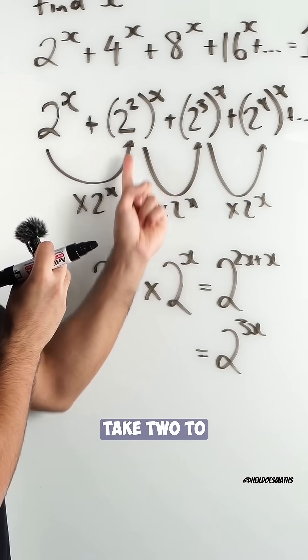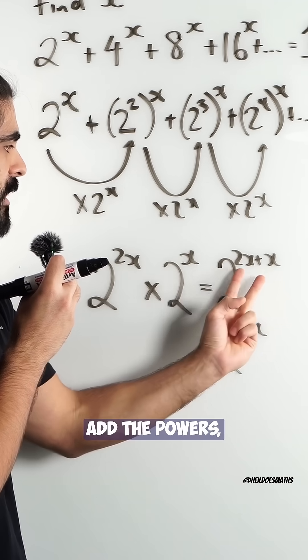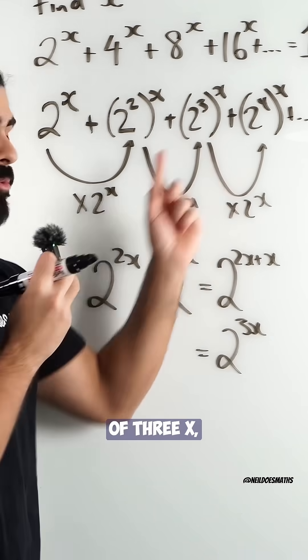And if you take 2 to the power of 2x, multiply it by 2 to the power of x, you add the powers, you get 2 to the power of 3x, which is this term. So it works.